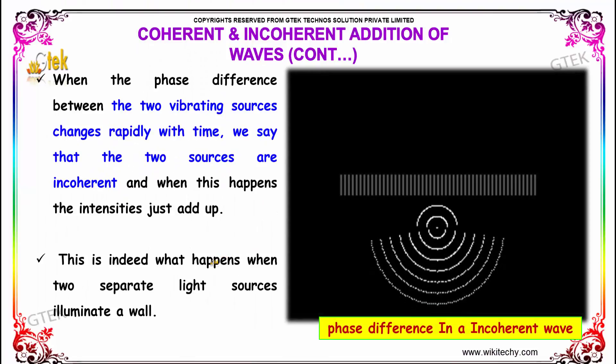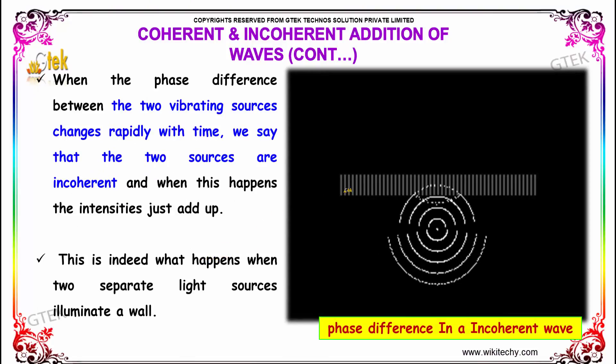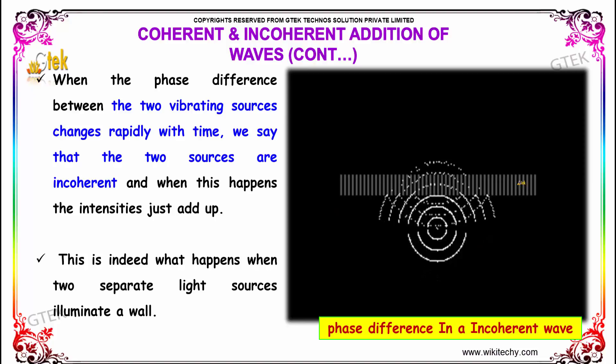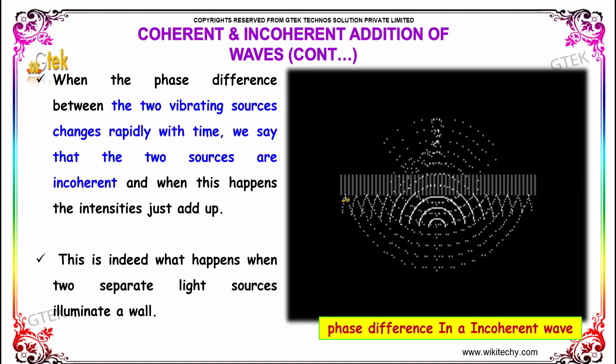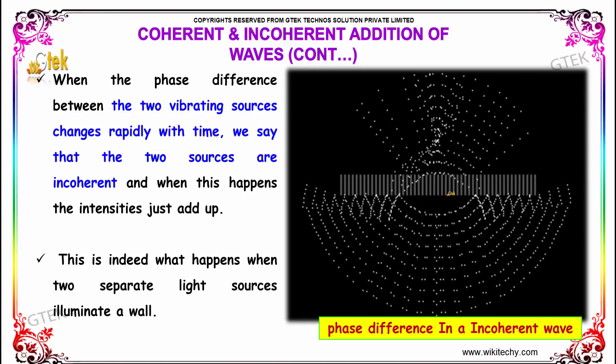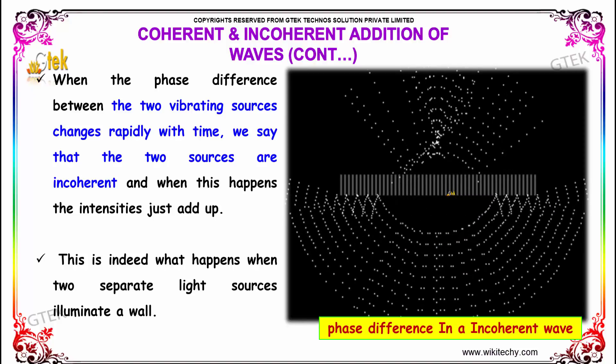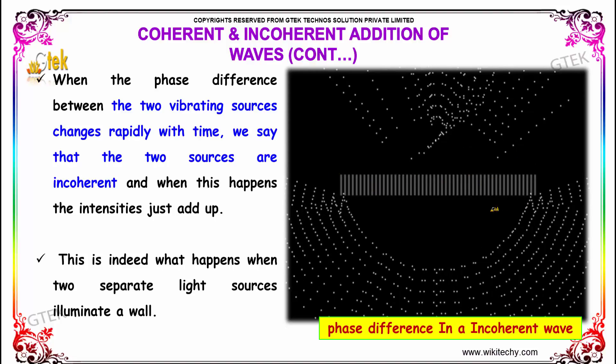When the phase difference between two vibrating sources changes rapidly with time, we say that the two sources are incoherent. When this happens, the intensities just add up. This is indeed what happens when two separate light sources illuminate a wall.